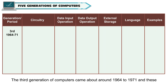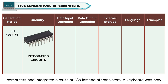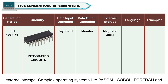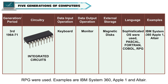The third generation of computers came about around 1964 to 1971. These computers had integrated circuits or ICs instead of transistors. A keyboard was now used to input data and the output was received on a monitor. Magnetic disks provided external storage. Operating systems and languages like PASCAL, COBOL, FORTRAN and RPG were used. Examples are IBM System 360, Apple One and Altair.